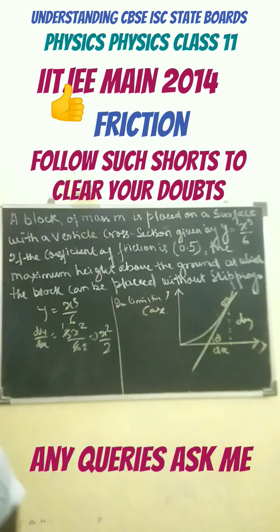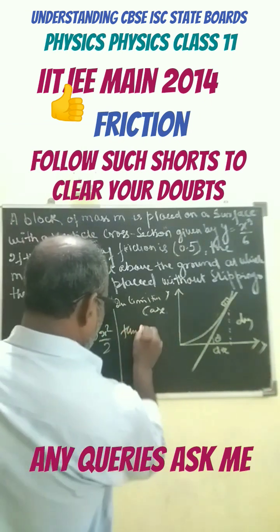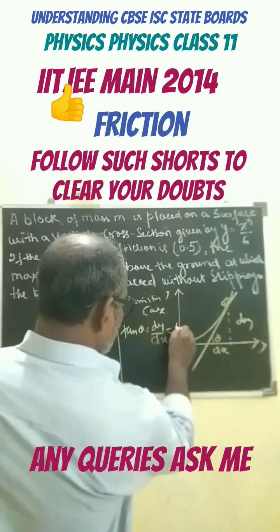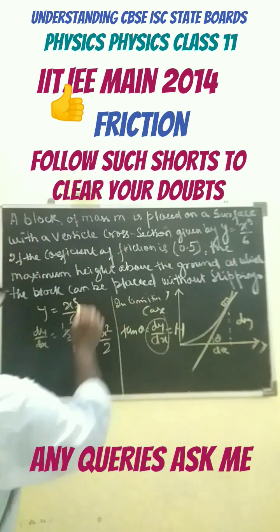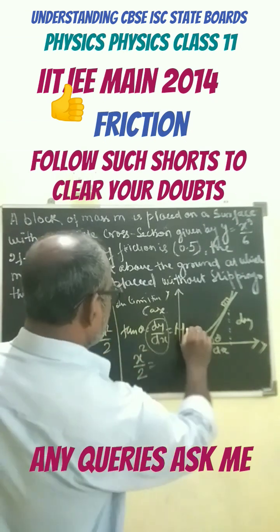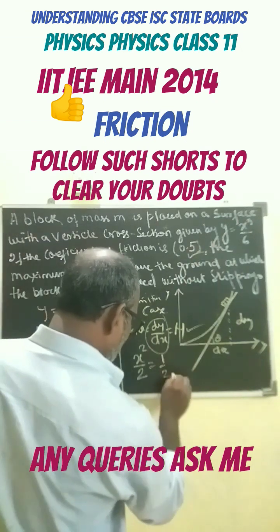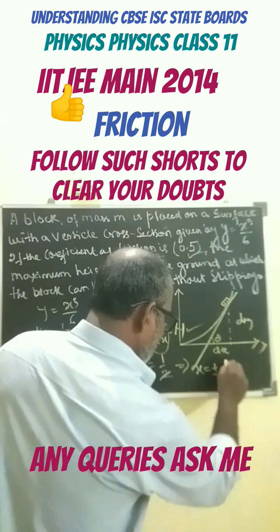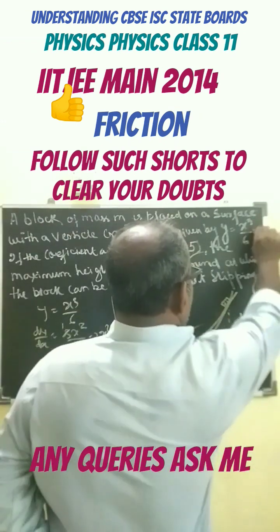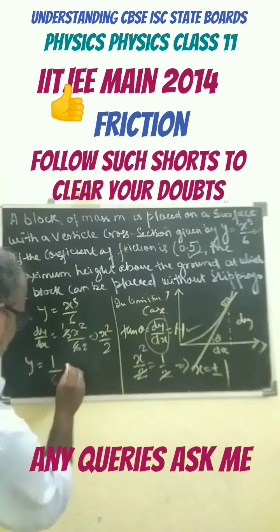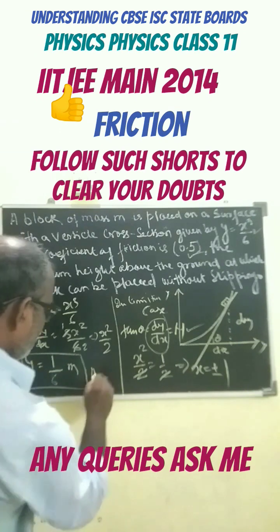Now from here it is a limiting case. Therefore in the limiting case, tan theta equals dy by dx equals mu. Here dy by dx is given as x squared by 2. So we write x squared by 2 equals mu, which is 0.5, that is 1 by 2. This gives x equals plus or minus 1. Putting this value in the equation, we have y equals 1 by 6 meter. So this is the answer.